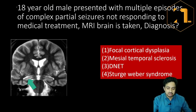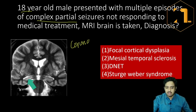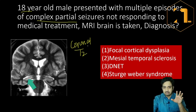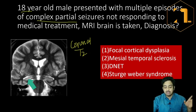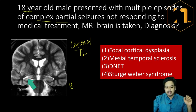First, a case of an 18-year-old male who presented with multiple episodes of complex partial seizures which were not responding to medical treatment. MRI brain was taken. This is a T2 coronal image — the most important sequence in epilepsy imaging. There is a lesion here. The most important region to assess when dealing with a seizure disorder is the hippocampus. This is the region of hippocampus.